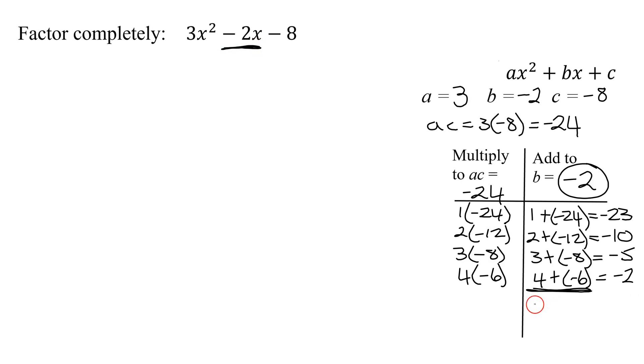So instead of -2x, I'm going to have 4x - 6x. So I'm rewriting my problem up here. I have 3x² and instead of -2x, I'm going to have + 4x - 6x - 8. Because 4x - 6x equals -2x.